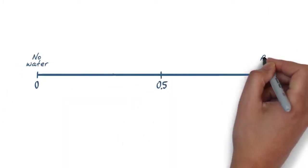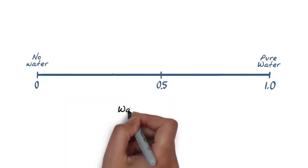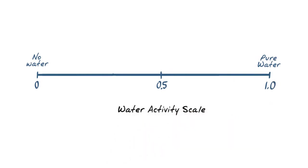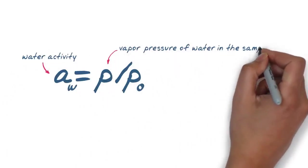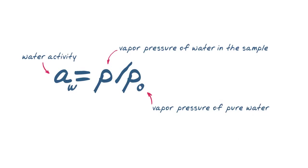Water activity is based on a scale of 0 to 1.0, with pure water having a value of 1.00. It is defined as the vapor pressure of water over a sample divided by the vapor pressure of pure water at the same temperature.